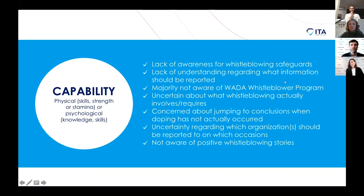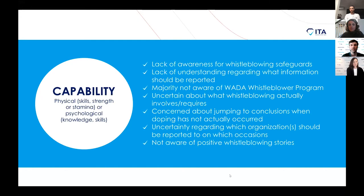Capability addresses both physical capabilities and psychological capability — things like knowledge and skills. What came through in the research is that coaches and athletes were often unaware of whistleblowing safeguards, such as protections in place for them, including anonymity — the fact that they don't have to put their name to the report. There was also a lack of understanding about what information should be reported — do they have to have all the evidence, or is it okay to just report suspicions? We should be encouraging them to report suspicions, because you never know when the information you have might be the last piece of a puzzle already being put together by an organization. The majority were also not aware of WADA's whistleblower program — the protections and the essential contract that allows you protections.